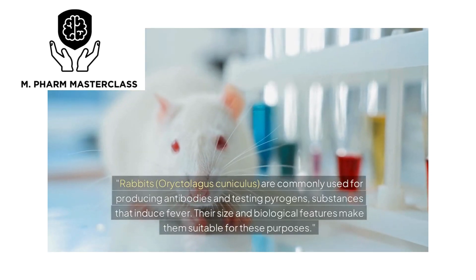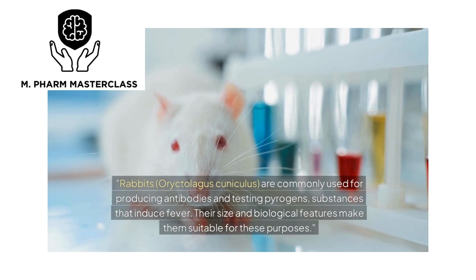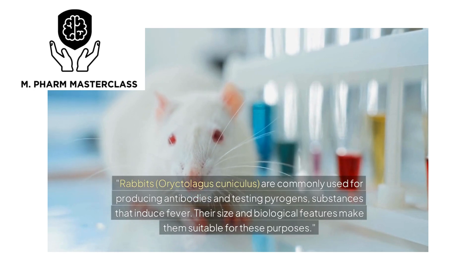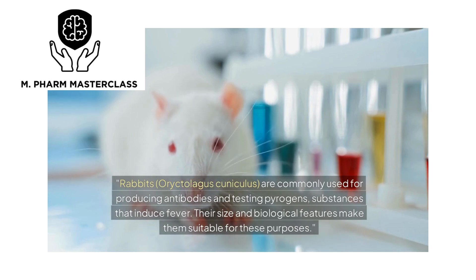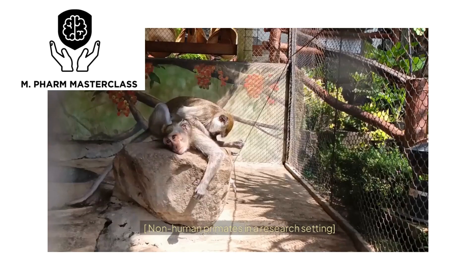Rabbits, Oryctolagus cuniculus, are commonly used for producing antibodies and testing pyrogens — substances that induce fever. Their size and biological features make them suitable for these purposes.